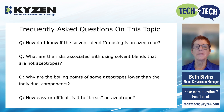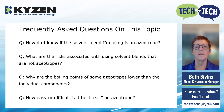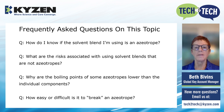Why are the boiling points of some azeotropes lower than the individual components? This is due to a molecular bonding of the two materials that causes the heat of vaporization to be lower, which lowers the boiling point — meaning you don't need to put as much heat into it to get it to boil. How easy or difficult is it to break an azeotrope? It's pretty difficult. You'd need really high temperature. Sometimes pressure can break the azeotrope, but it would have to be a super unusual circumstance. It doesn't happen easily.